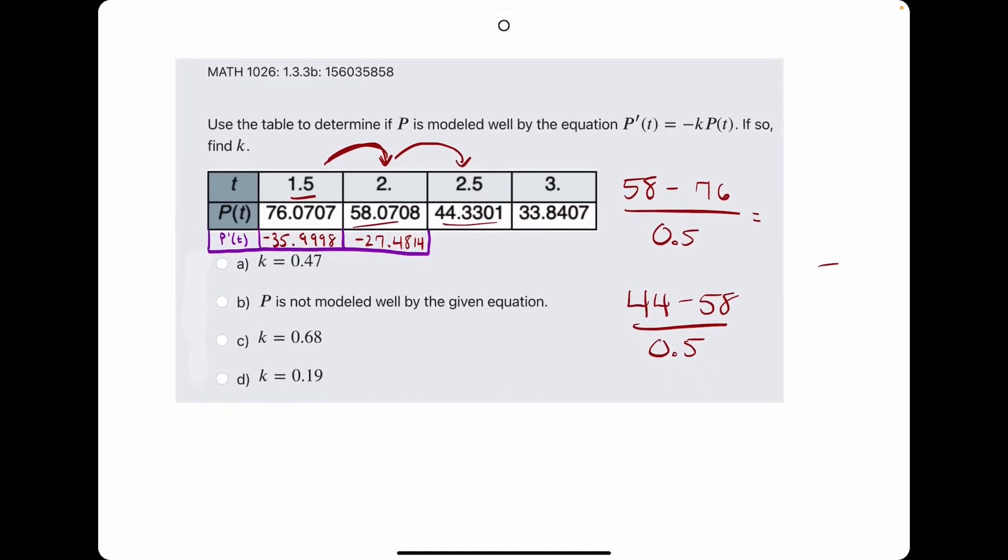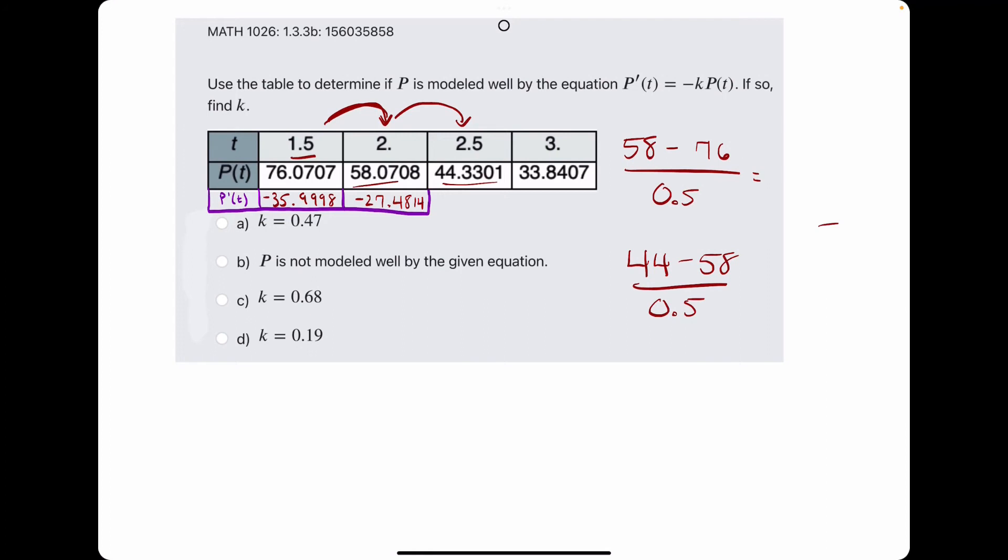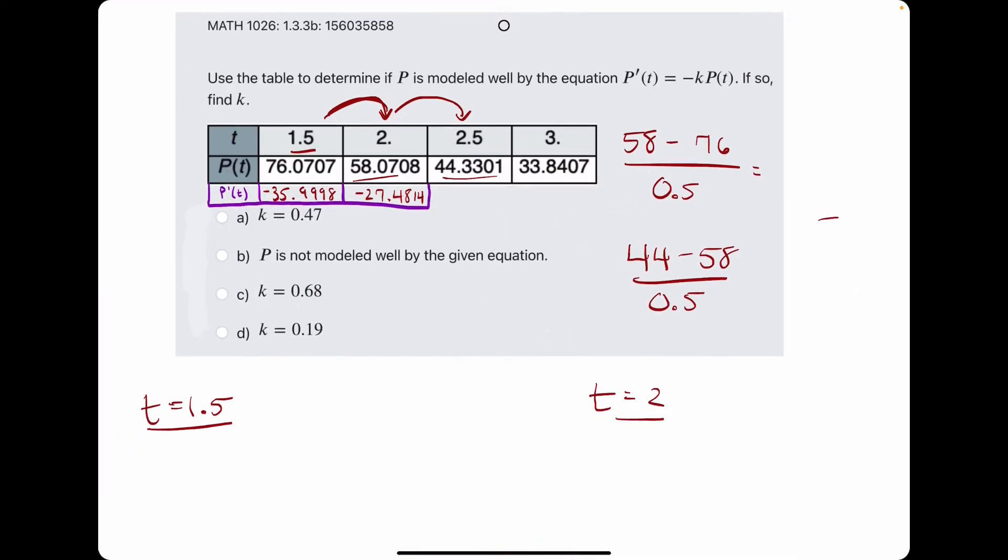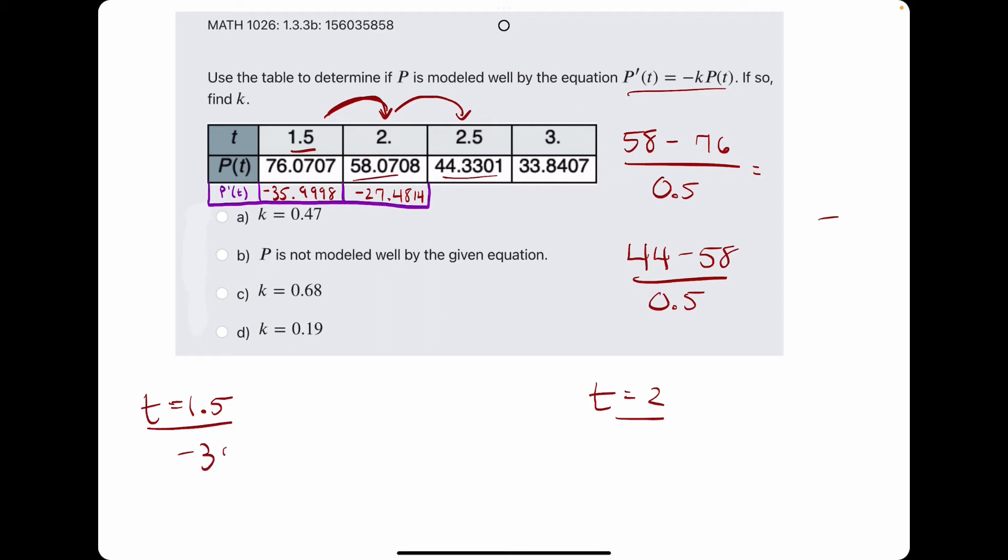Now that we have the p prime values, the process will actually be the exact same. So let's pick up the pace for t at 1.5, and at t equals 2, we are calculating k using this equation. So plugging in the values...